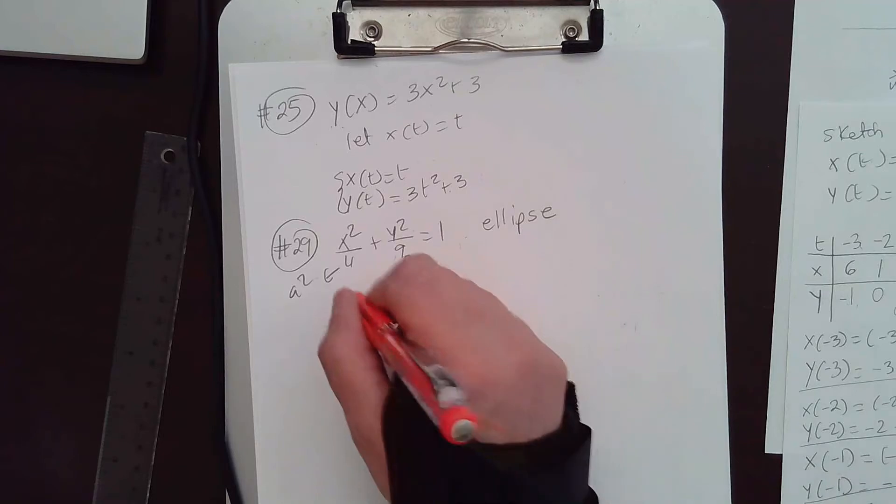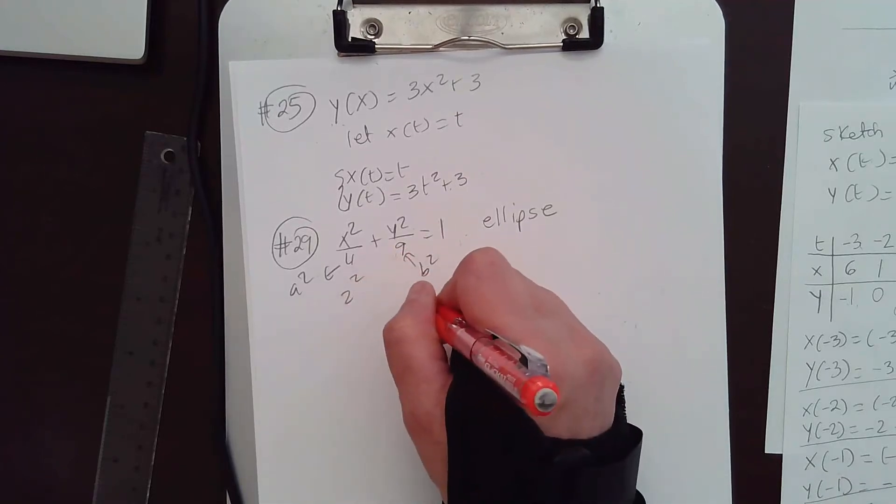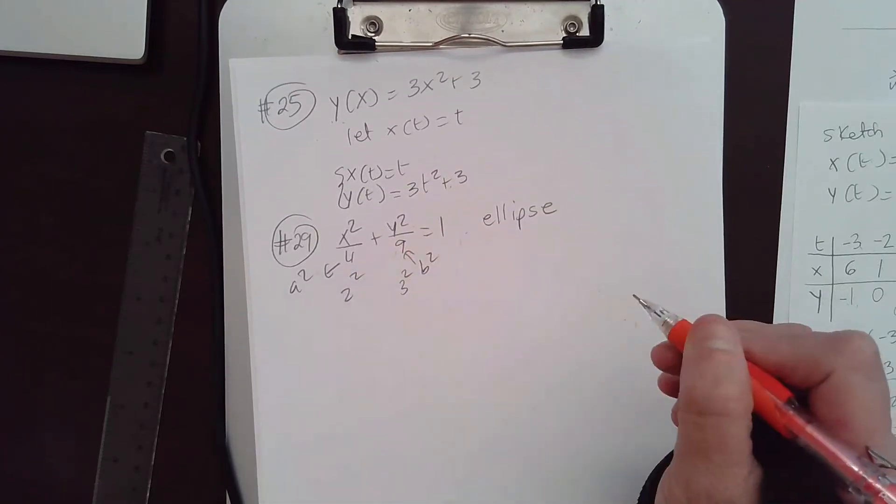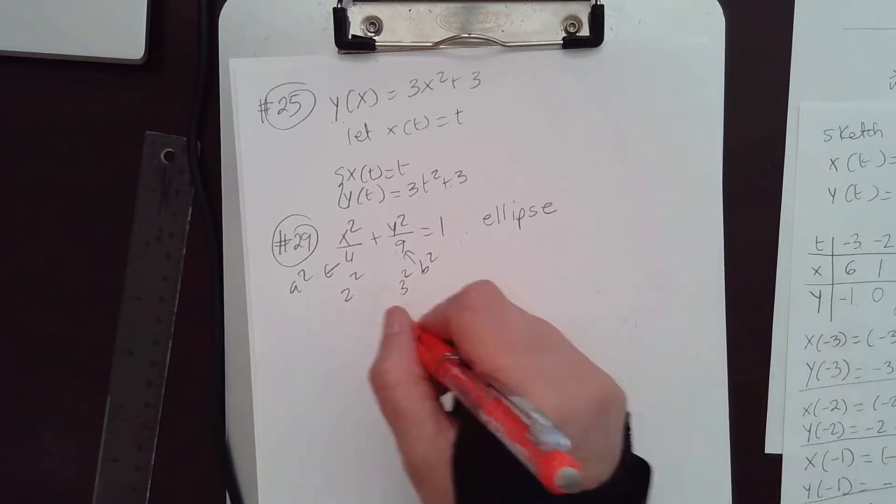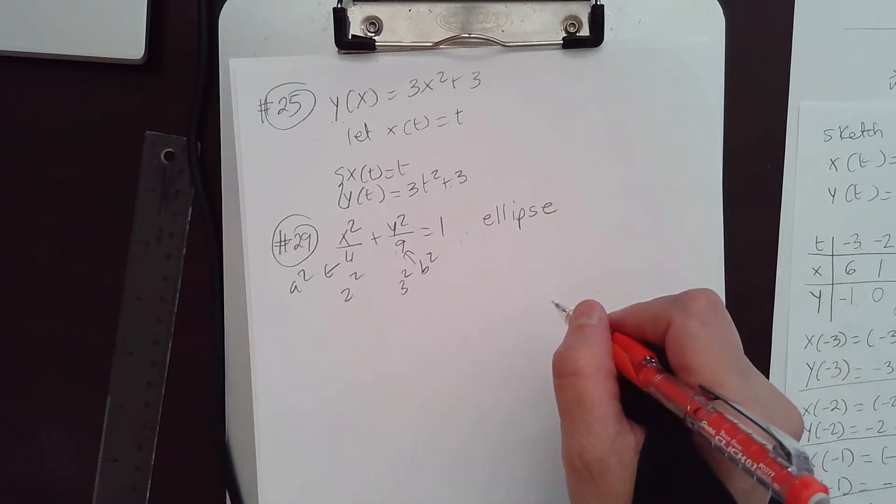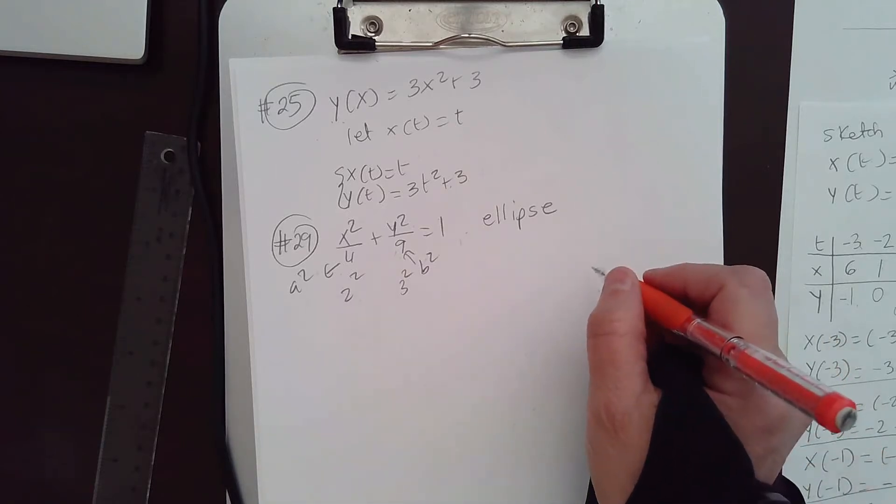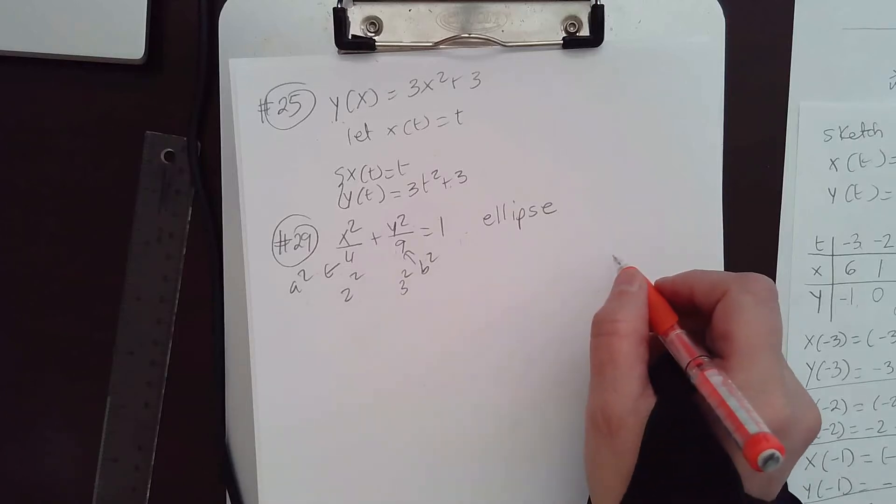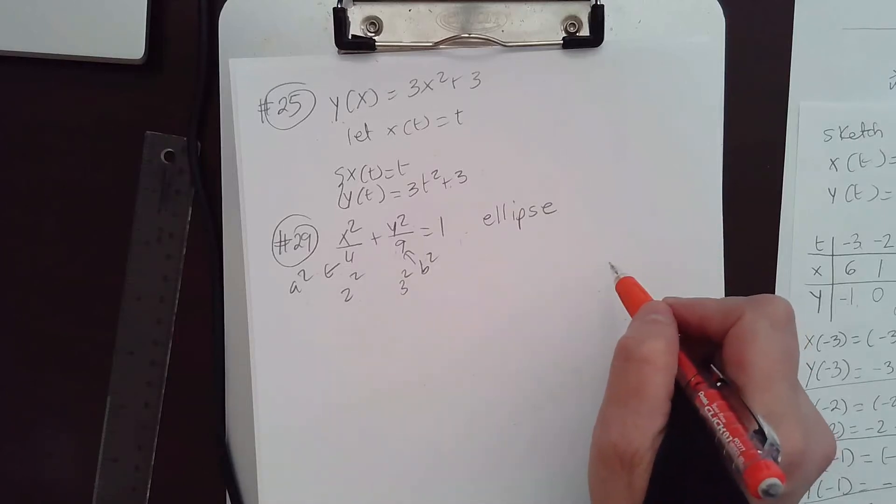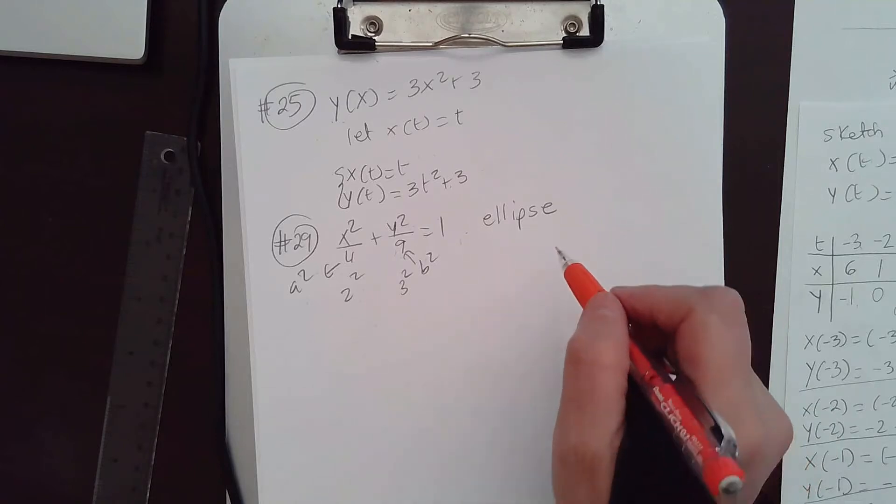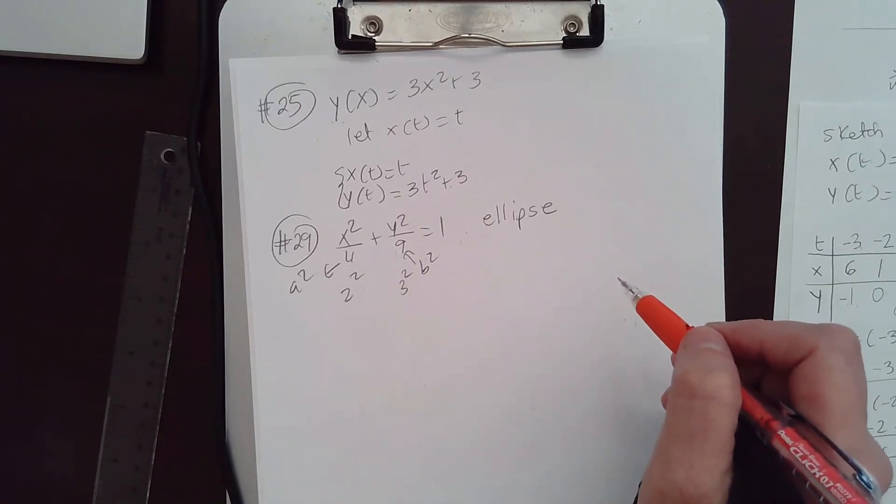a is 2, right? So, you have 2 squared, and this is 3 squared. So, that's an ellipse where you have the vertices are 2, 0, negative 2, 0, 0, 3, 0, negative 3. So, that's what you have here.